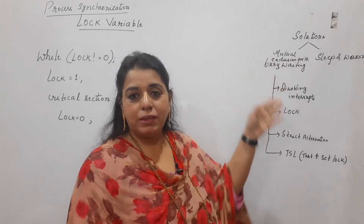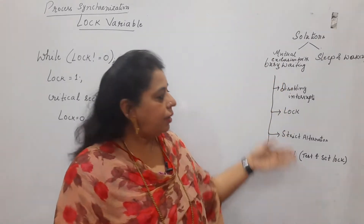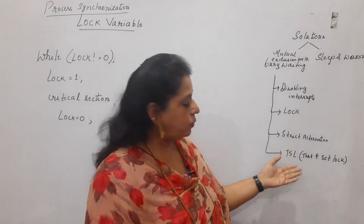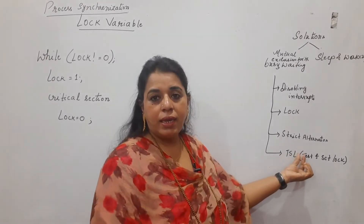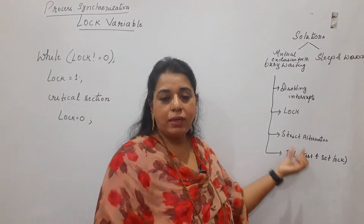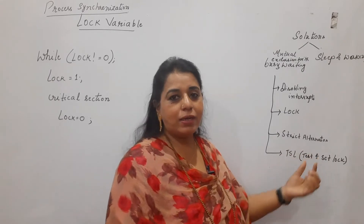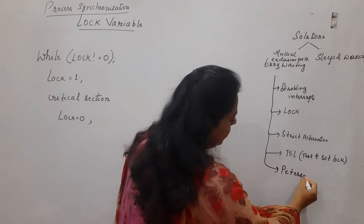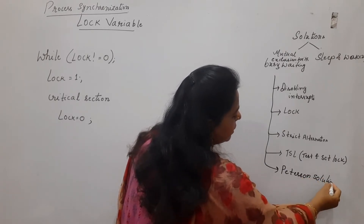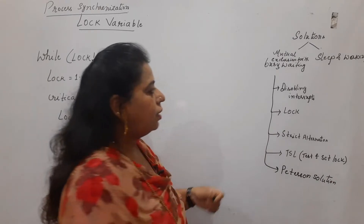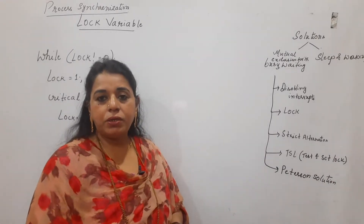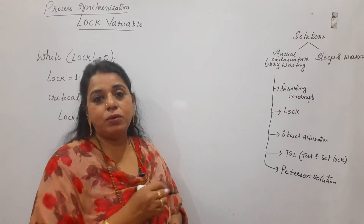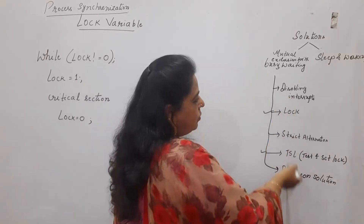What are the different solutions? Disabling interrupts, lock variable, strict alternation, TSL (test, set and lock instruction), and the most popular — the Peterson solution. For all these solutions, first we need to check whether mutual exclusion can be achieved or not, and if achieved, why we call these solutions 'busy waiting'.